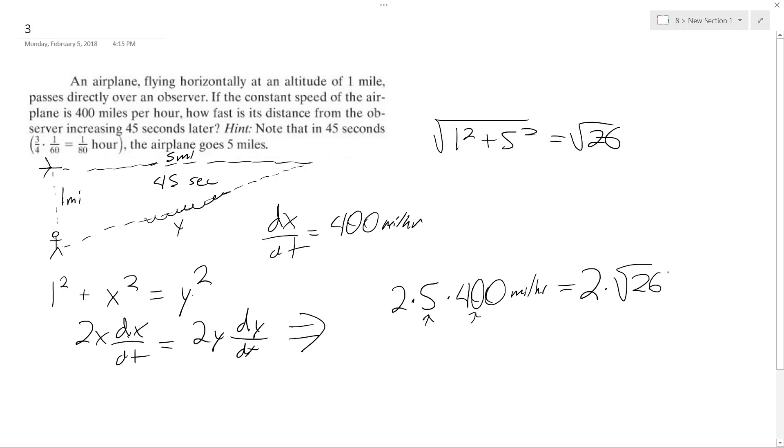So square root of 26, this is what I'm plugging for y, and then we have dy/dt, and this is what we're looking for, so 2 times 5 times 400 is equal to 4,000.